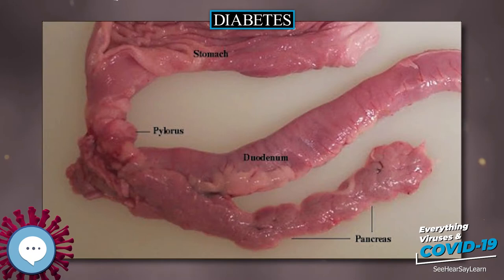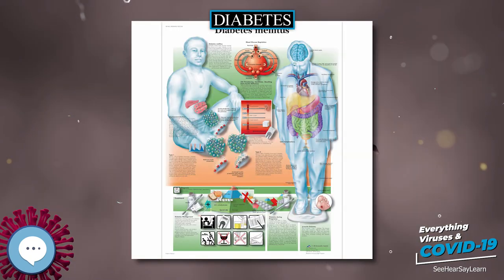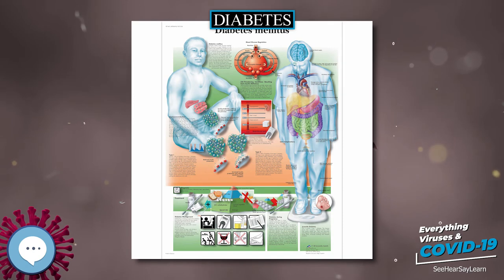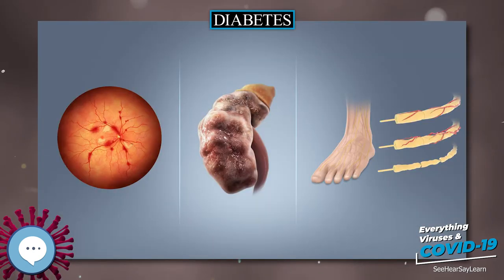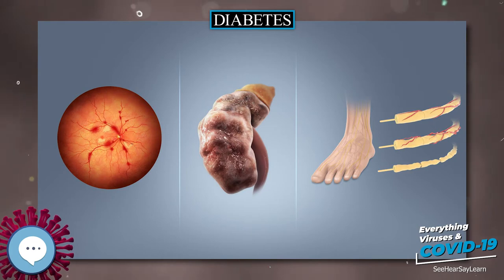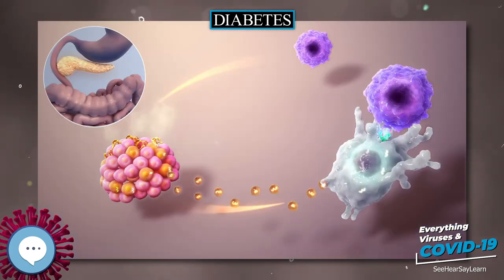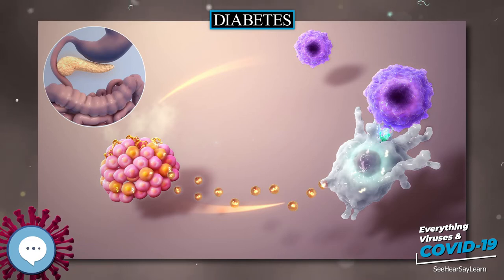There is a link between cognitive deficit and diabetes. Compared to those without diabetes, those with the disease have a 1.2 to 1.5-fold greater rate of decline in cognitive function. Having diabetes, especially when on insulin, increases the risk of falls in older people.